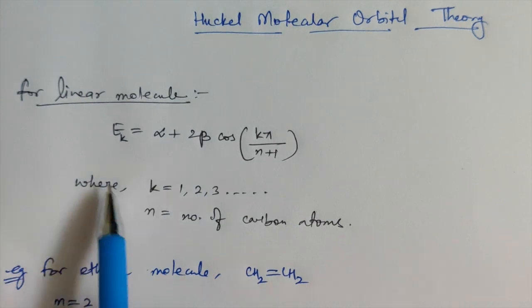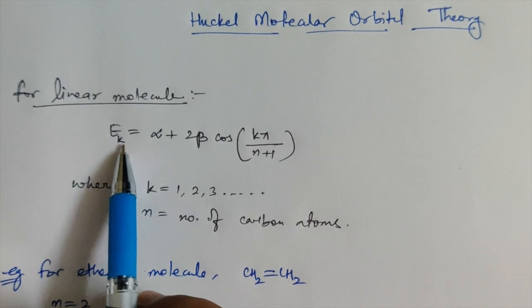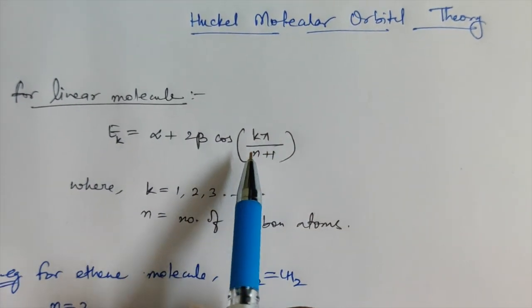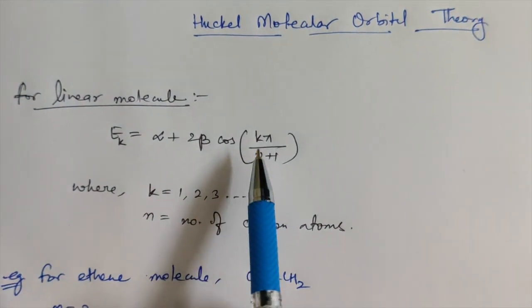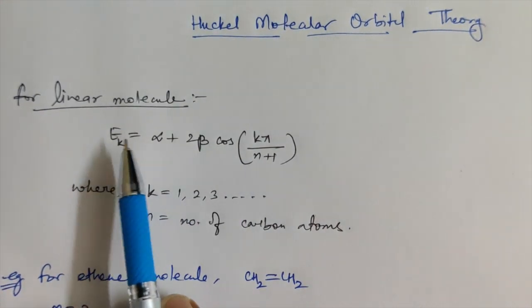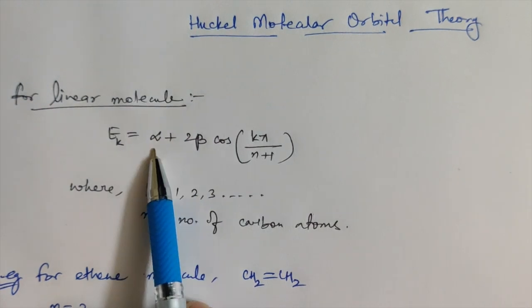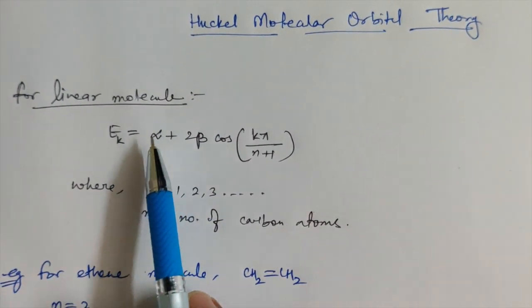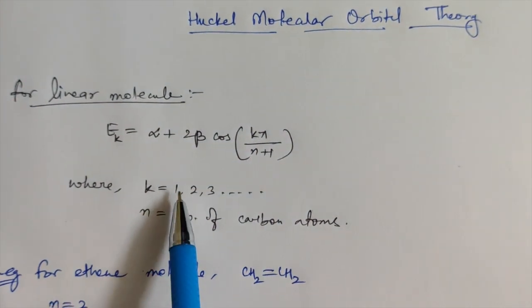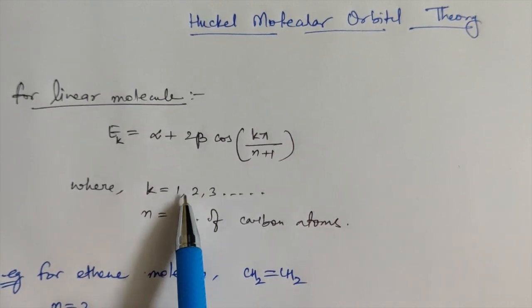In order to find out the energy or the roots of your secular determinant, you can use this equation: E_K = α + 2β cos(Kπ / (N+1)), where α and β are constants. Energies are generally expressed in terms of α and β themselves, so you don't need to put numerical values — just get the answer in terms of α and β. K is a constant starting from one; K cannot have a value of zero.